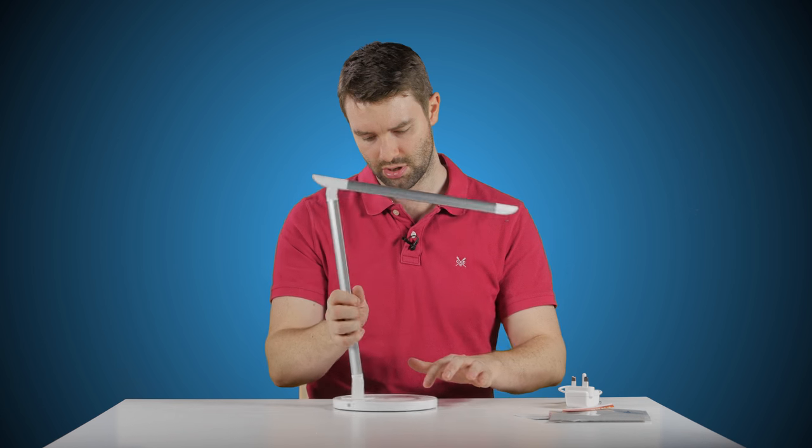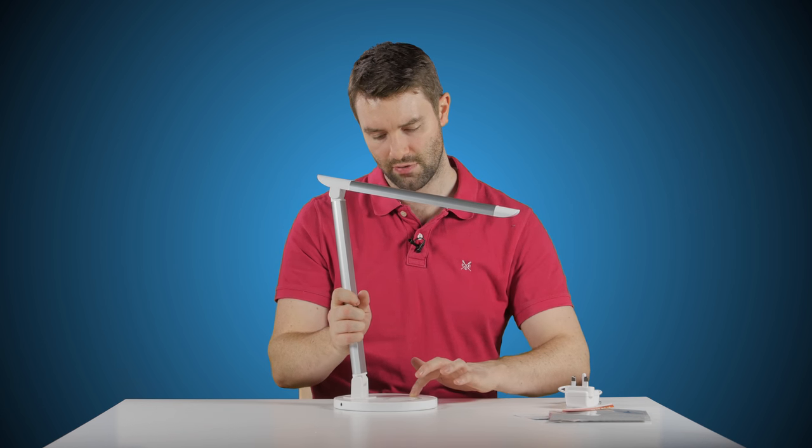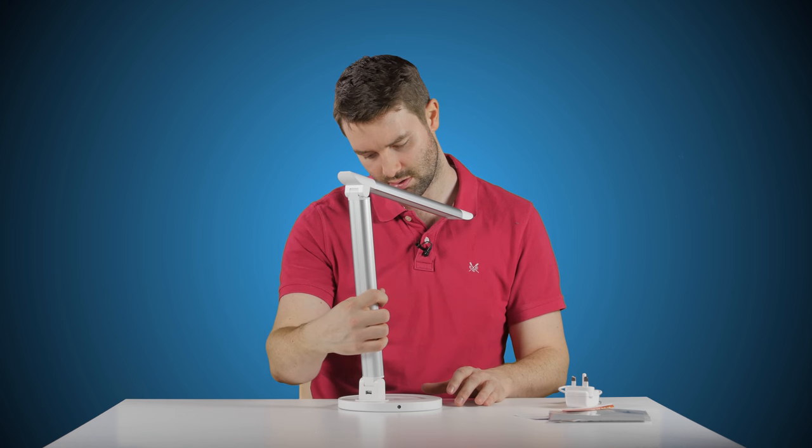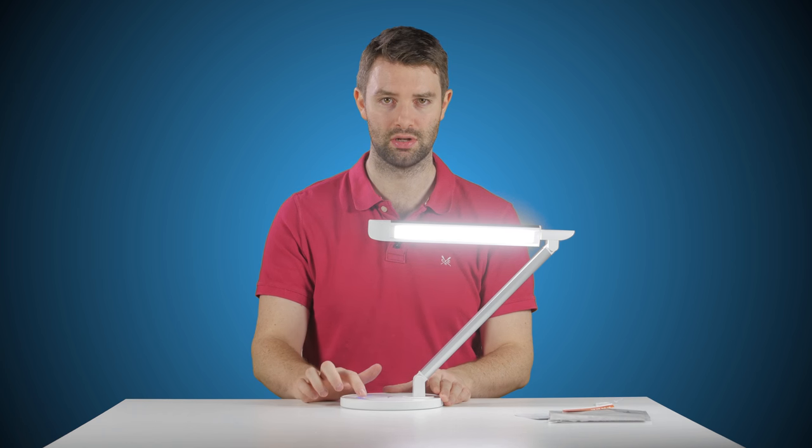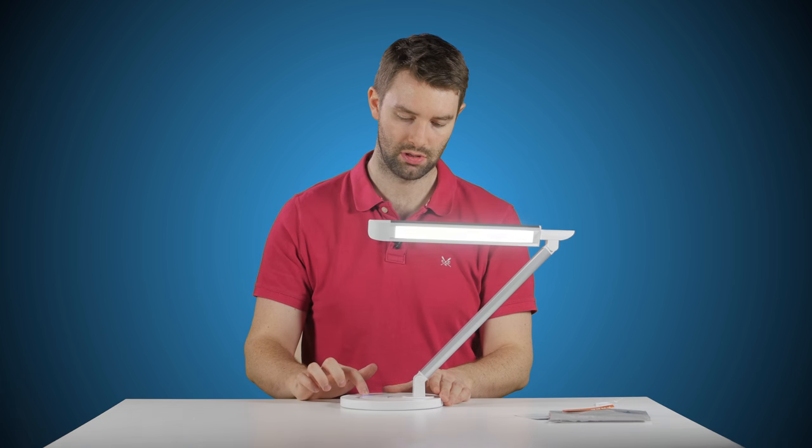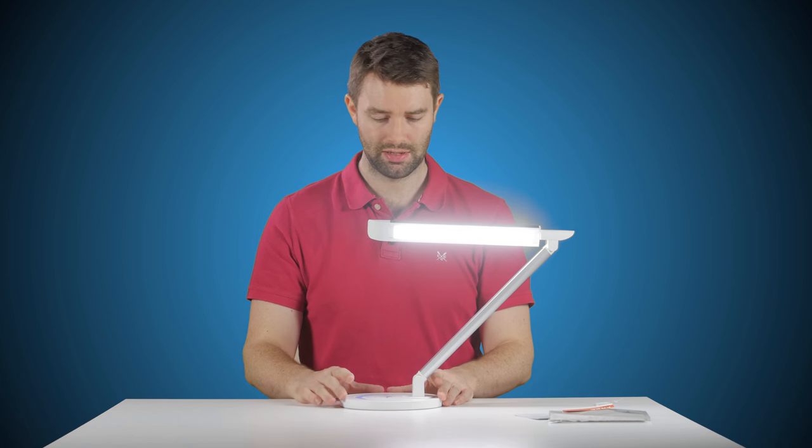You've got this touch area for dimming the light. And that's it on its brightest setting, so I'll just run low, high, low, high, and that's it.